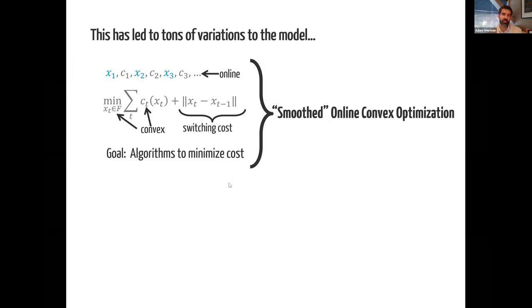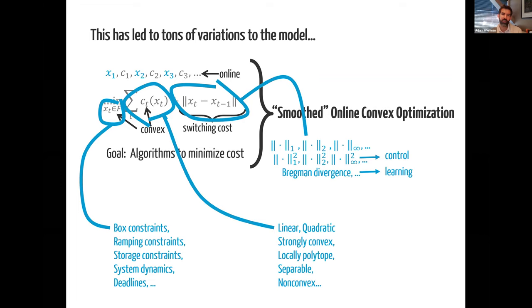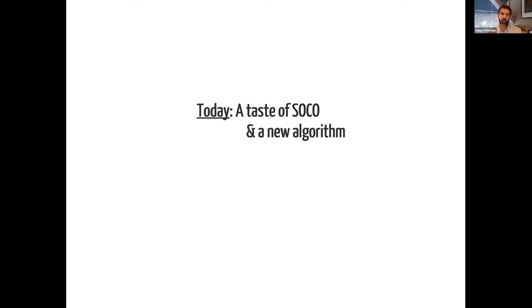There's been a really wide deployment of things related to SOCO in energy and also outside of energy. Because of all those applications, there's a huge amount of variations of this model. I'm talking about the simplest one, but you can think of lots of different switching costs, whether they be norms, Bregman divergence, or more general functions. In energy, storage constraints or ramping constraints are really important for the action set, and depending on the problem, lots of different assumptions about the cost functions themselves tend to crop up. With that, hopefully the model and the motivation are clear, and it's a good time to take another round of questions before I talk about the algorithms.